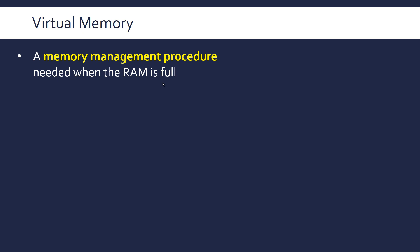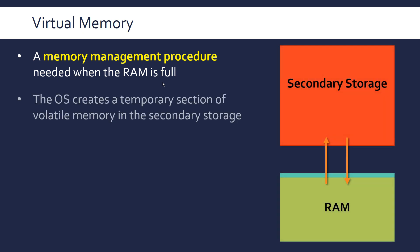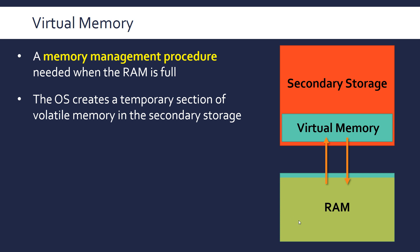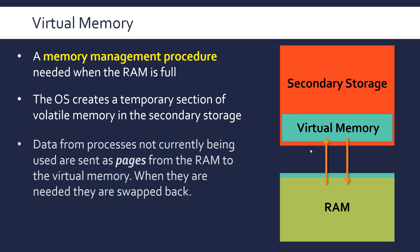So the capacity has been used up in the RAM, there's no more space to store any more data. What happens is the operating system, which is what enacts this procedure, creates a temporary section of volatile memory that behaves like volatile memory in the secondary storage, so it acts like it's part of the RAM essentially.